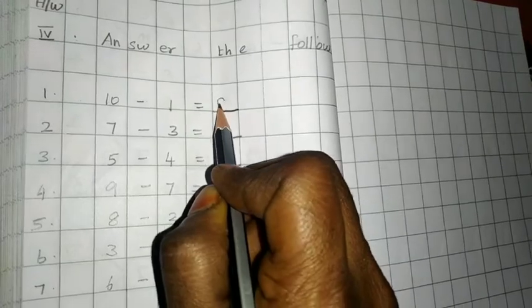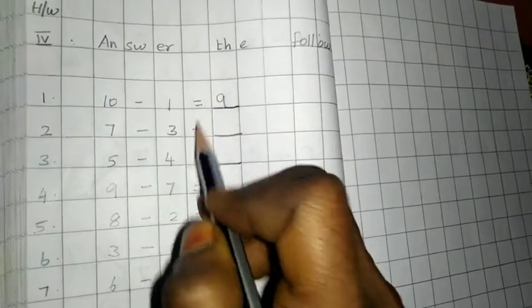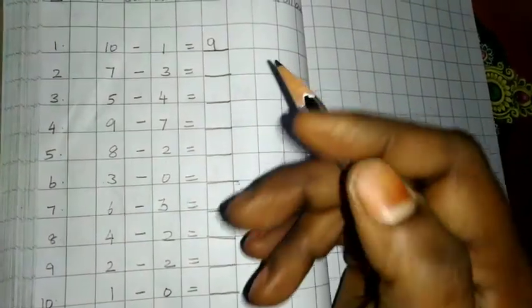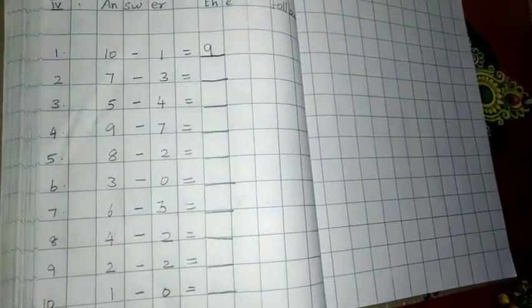In the same way, you have to complete all the ten problems. Clear, children? Use number one method to complete the answers.